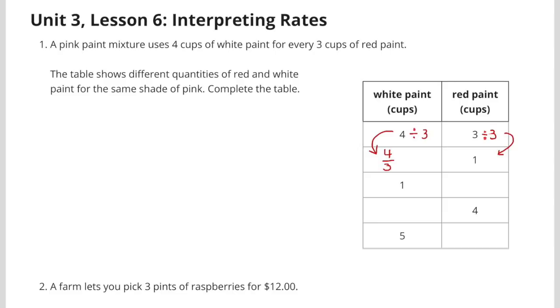I've divided the 3 cups of red paint by 3 to get that 1. And if I did that, I needed to divide the 4 by 3, which gave me 4 thirds. So for every 1 cup of red paint, I would have 4 thirds cups of white paint.